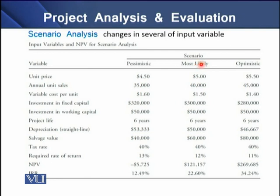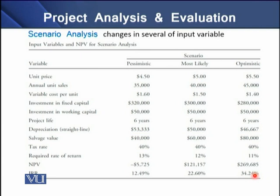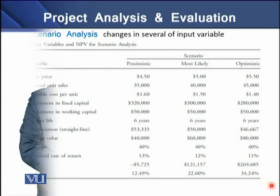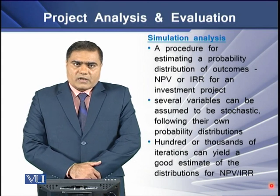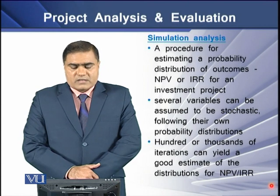The most likely scenario is the one already used as the basic capital budgeting model. Using pessimistic and optimistic values, we get different NPV and IRR results. For the pessimistic scenario, we have a negative NPV with an IRR of 12.40% against a required 9%. For the optimistic scenario, we have a higher NPV and an IRR of 34.24%, representing the best-case outcome.